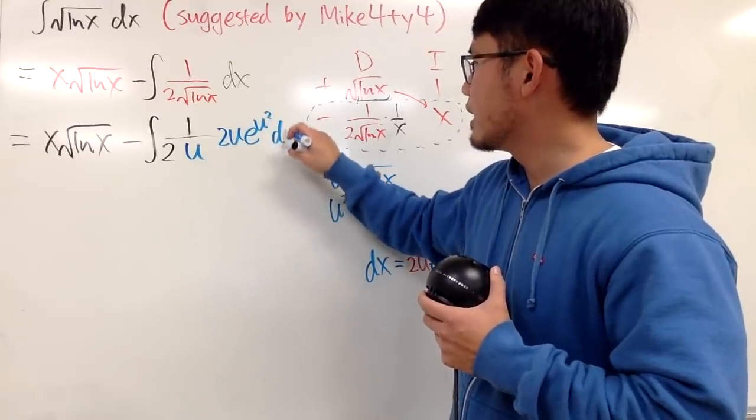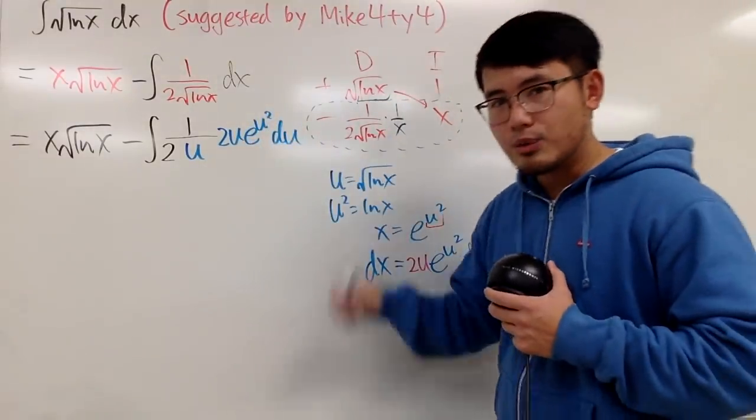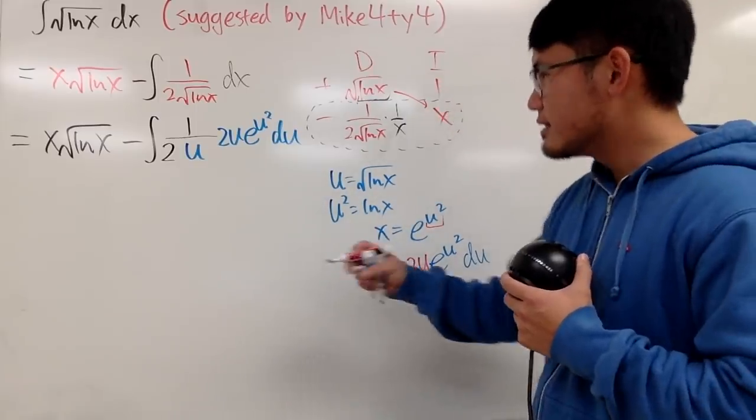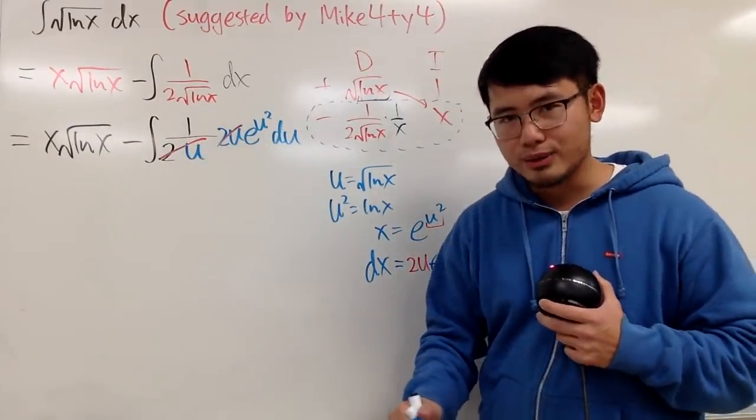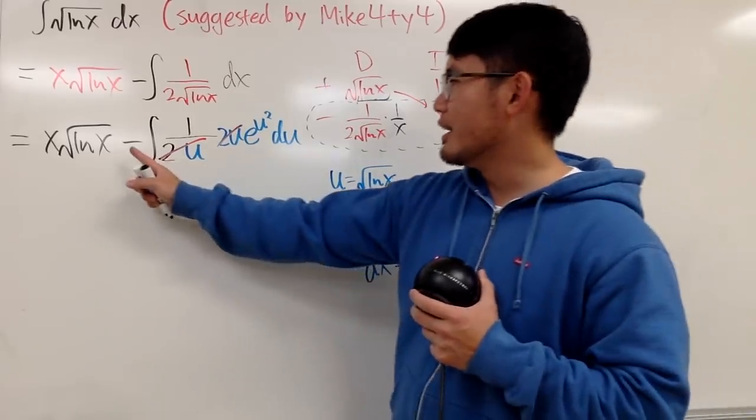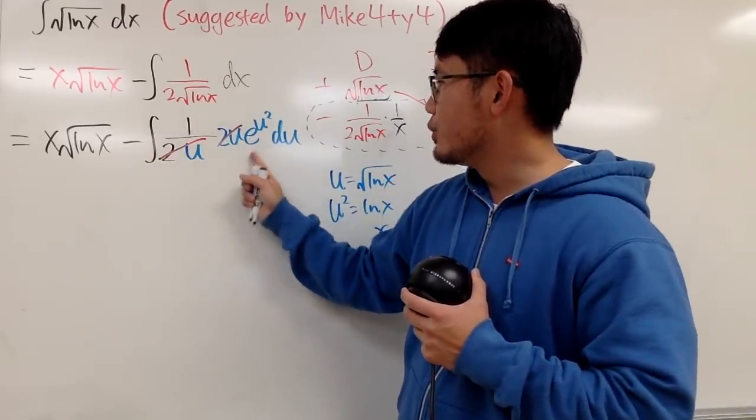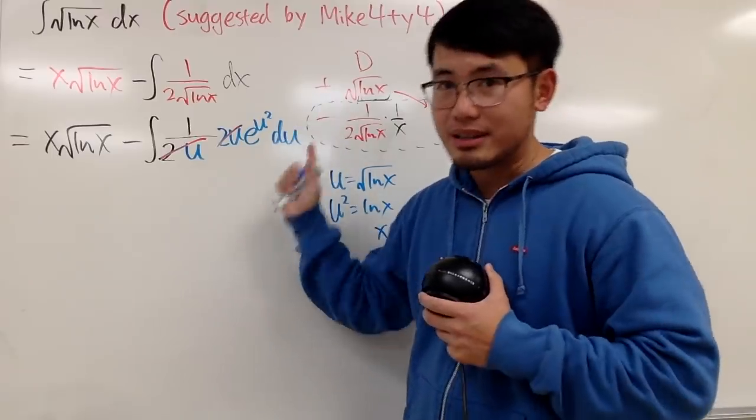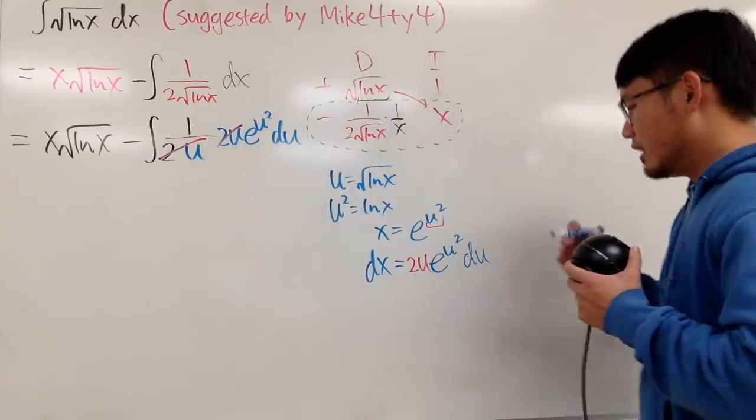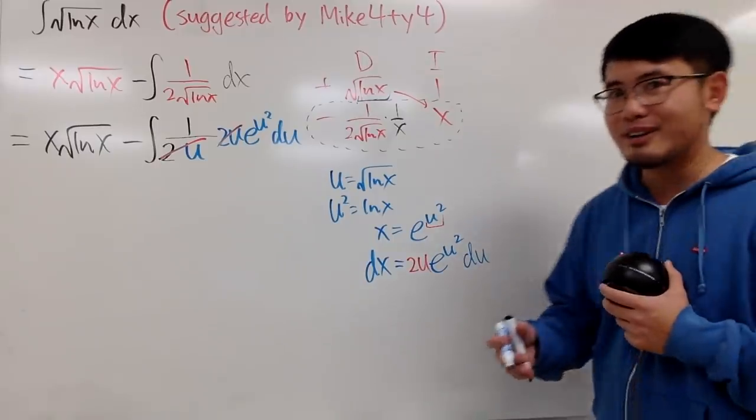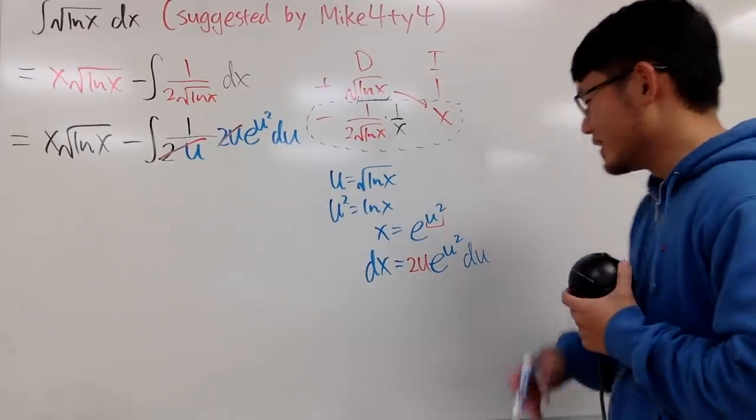Very, very nice. Well, how nice is this? Nice enough that the 2u and 2u cancel each other out. And then you have the integral of e to the u-squared, like this. This is so nice, because that's exactly the imaginary error function that I have talked about in a previous video.